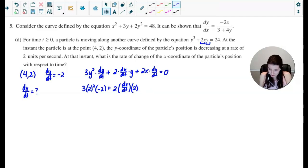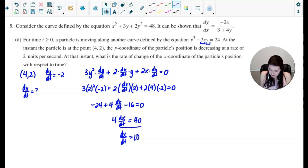That's still going to be plus 2 times the x value of 4, and then again dy dt is negative 2. All right, doing some simplifying here. This would be negative 24 plus 4 dx dt. This would be minus 16 is equal to 0. Let's move the negative 24 and the 16 over to the other side. We have a positive 40. So it looks like dx dt is equal to 10. And that is your answer to part D.